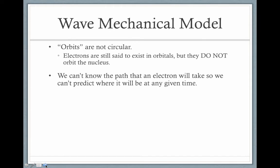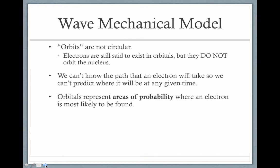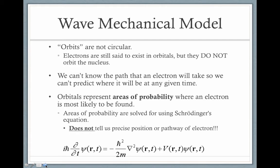Also according to this model, we can't know the path that an electron will take, so we can't predict where it will be at any given particular time. Instead, orbitals in this model represent areas of probability where an electron is most likely to be found. We can't say for sure exactly where it is, but we can say where it's most likely to be and where it absolutely can't be at a given time. We calculate areas of probability using this very complicated equation called Schrodinger's equation. You will not be responsible for solving this equation, but this is what it looks like.